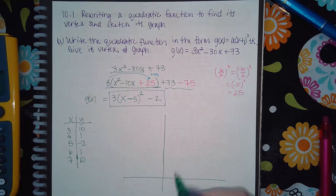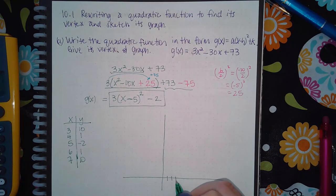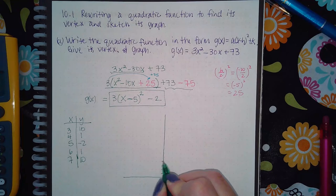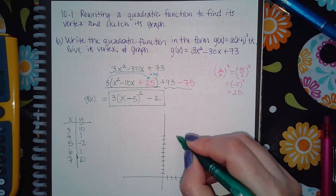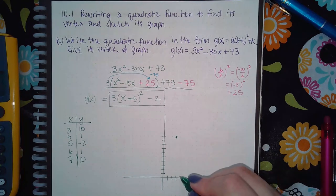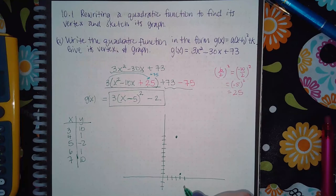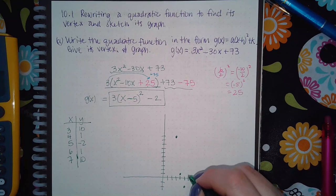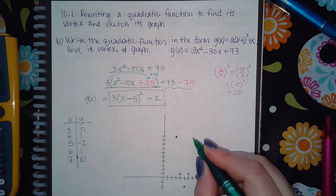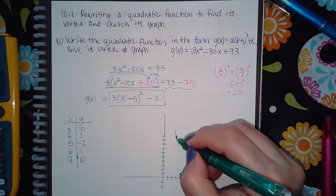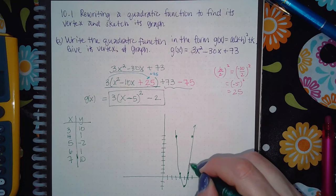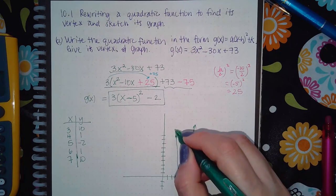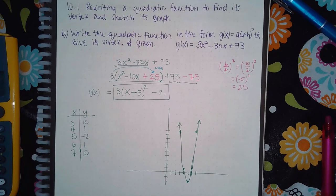So then we have 1, 2, 3 and 1, 2, 3, 4, 5, 6, 7, 8, 9, 10. So 3 and 10, and then 4 and 1, 5 and negative 2, 6 and 1, and then 7 and 10. So you get this really narrow graph, but it should look like a parabola, and that's all you do for these.